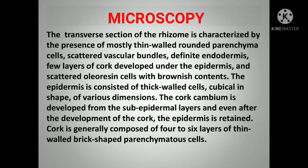The thick-walled cells are cubical in shape and of various dimensions. The cork cambium is developed from the sub-epidermal layers, and even after the development of the cork, the epidermis is retained. Cork is generally composed of 4 to 6 layers of thin-walled brick-shaped parenchyma cells.